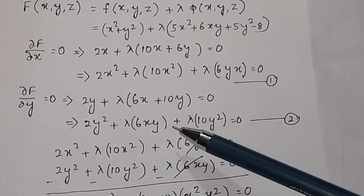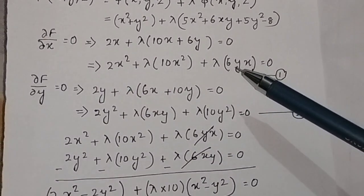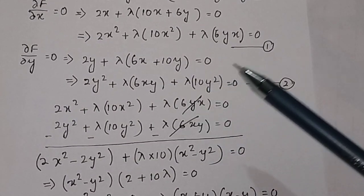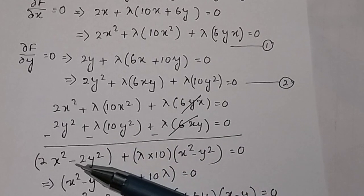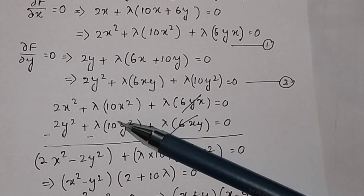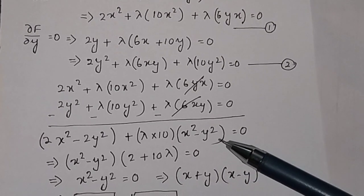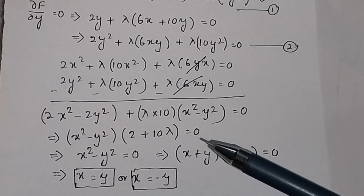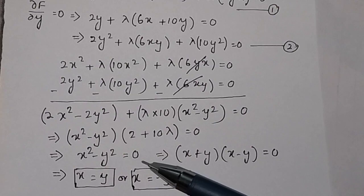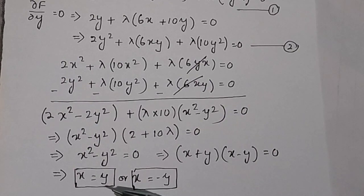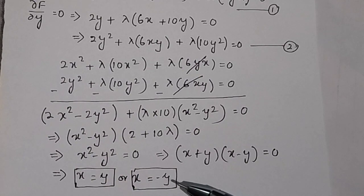Subtracting the second equation from the first gives: 2x² - 2y² + λ·10(x² - y²) = 0. Taking (x² - y²) common: (x² - y²)(2 + 10λ) = 0. So x² - y² = 0, which factors as (x + y)(x - y) = 0, giving us two cases: x = y and x = -y.